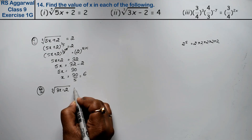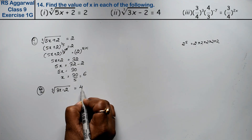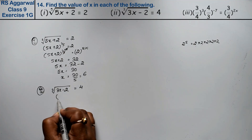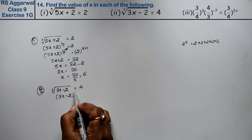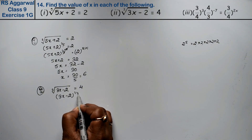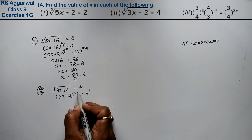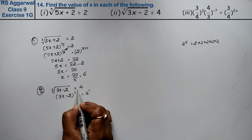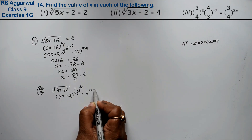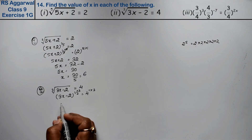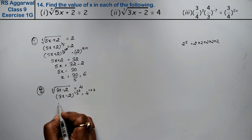The second part is: the cube root of (3x − 2) equals 4. We write this as (3x − 2) to the power 1/3 equals 4. Since the power is 1/3, we multiply both sides by the power of 3, raising both sides to the power 3.